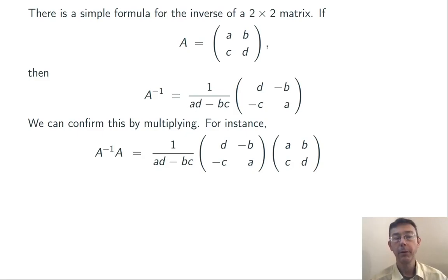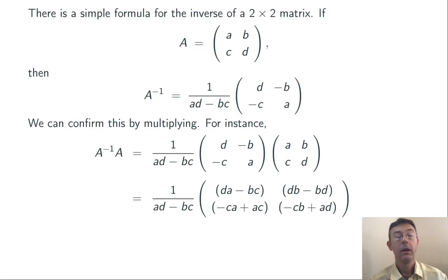We can verify that this formula works just by looking at AA^(-1) and A^(-1)A and checking that we get the identity matrix back. Let's just do A^(-1)A. Here's the computation we need to do. Multiplying rows and columns, doing dot products, we get another 2 by 2 matrix.